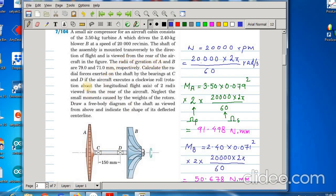The radii of gyration of A and B are given. Then, calculate the radial forces exerted on the shaft by the bearings at C and D if the aircraft executes a clockwise roll of 2 radians per second viewed from the rear of the aircraft. Neglect the small moments caused by the weights of the rotors. Draw the free body diagram of the shaft as viewed from above and indicate the shape of its deflected centerline.